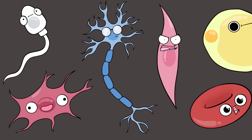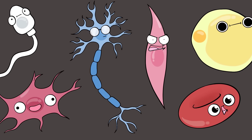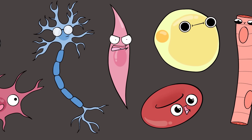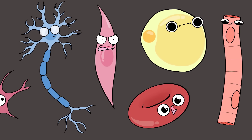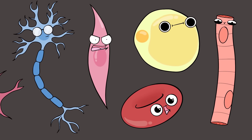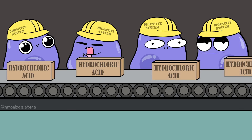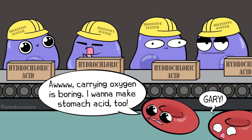Sometimes we forget how different the cells in the body can be. We kind of imagine them as little circle blobs when, in reality, there is so much body cell diversity. Parietal cells in the stomach, as part of the digestive system, they can make stomach acid. Thankfully, cells in other systems do not.